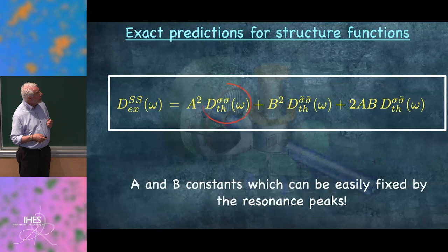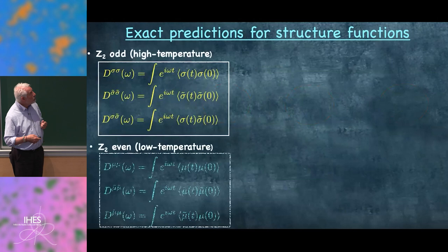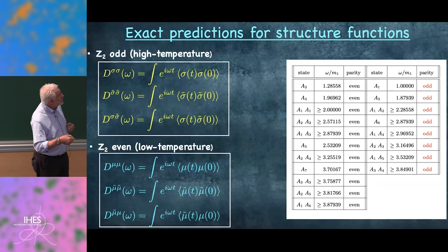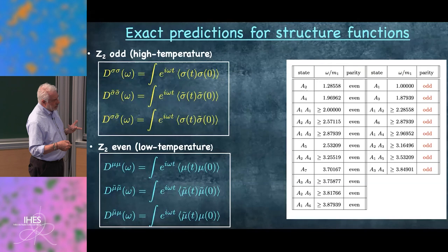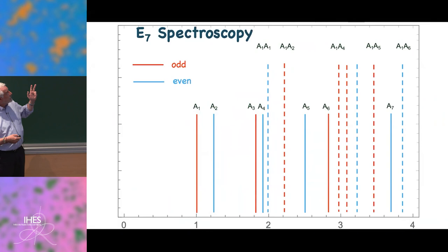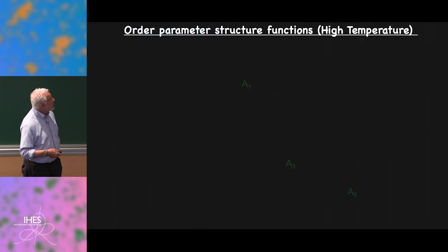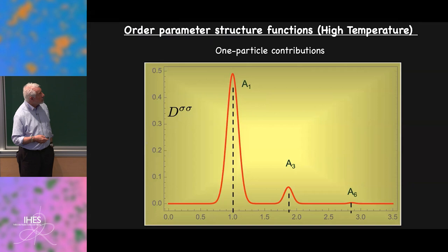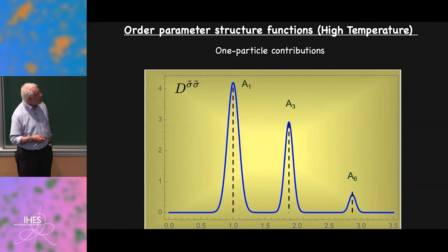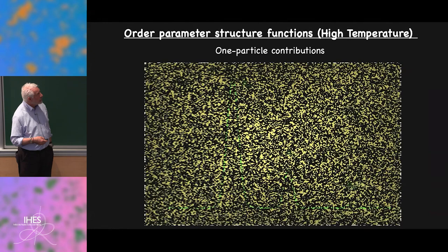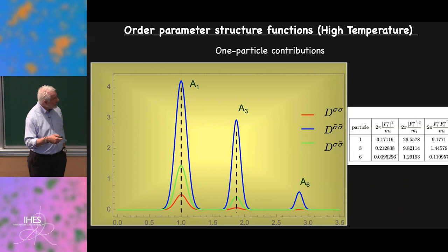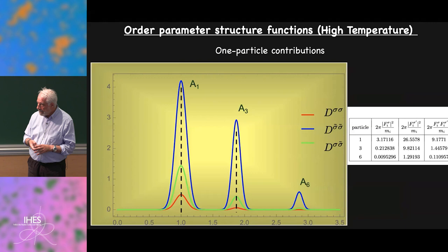Once you do this, you can compute the quantities using a certain number of particle contributions — the series converges very fast. There is an expected rich E7 spectroscopy: peaks at specific positions, then multiparticle continua. The one-particle contributions to sigma-sigma and sigma-sigma-tilde correlators give exact peak positions and weights. The two-particle contributions give resonances at threshold and continuous lines. Someone asks about widths — the theorist has exact delta functions for peak positions; any broadening comes from lattice effects and three-dimensionality, not from the theory.